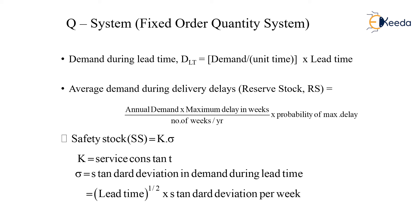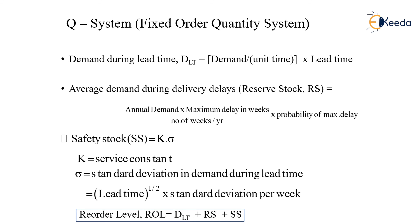So when we have the values of demand during lead time, reserve stock, and safety stock, we can directly find the ROL or reorder level, which equals the sum of all three: demand during the lead time plus the safety stock plus the reserve stock. This is how a Q system works. Thank you.